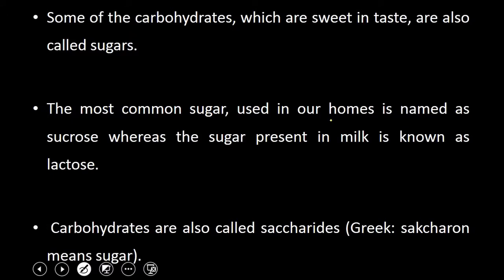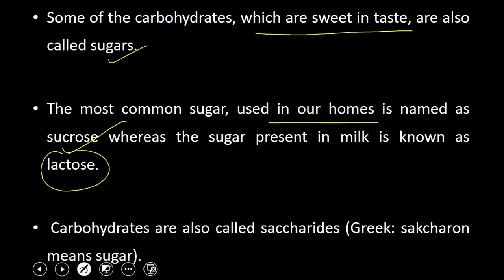Some of the carbohydrates which are sweet in taste are also called sugars. The most common sugar which we use in our homes is sucrose, whereas the sugar present in milk is known as lactose. Carbohydrates are also called saccharides. The word saccharide is derived from the Greek word saccharone, meaning sugar.